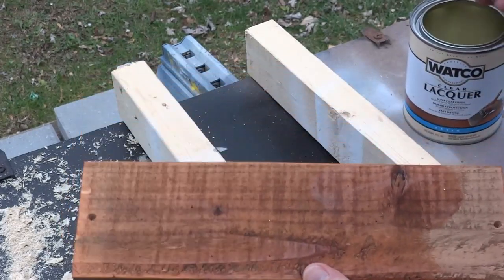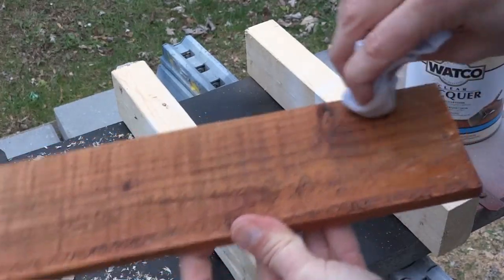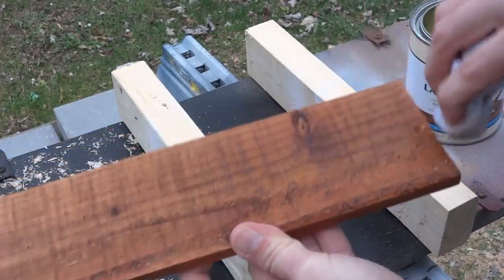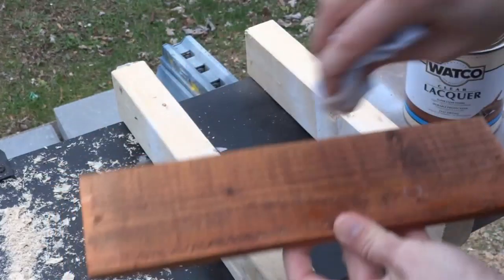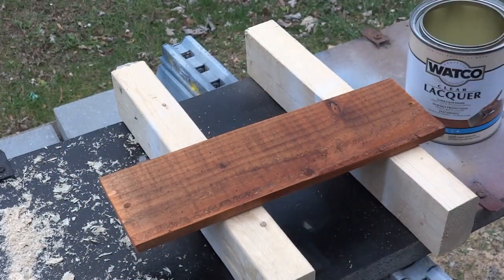Now that it's sanded, the last thing I'm going to do is put a couple of coats of lacquer on there just to help protect it from stains and give it a nice smooth finish. So I'll probably do two or three coats, let it dry, and then it'll be ready to go inside and get the magnets glued in and ready to use.